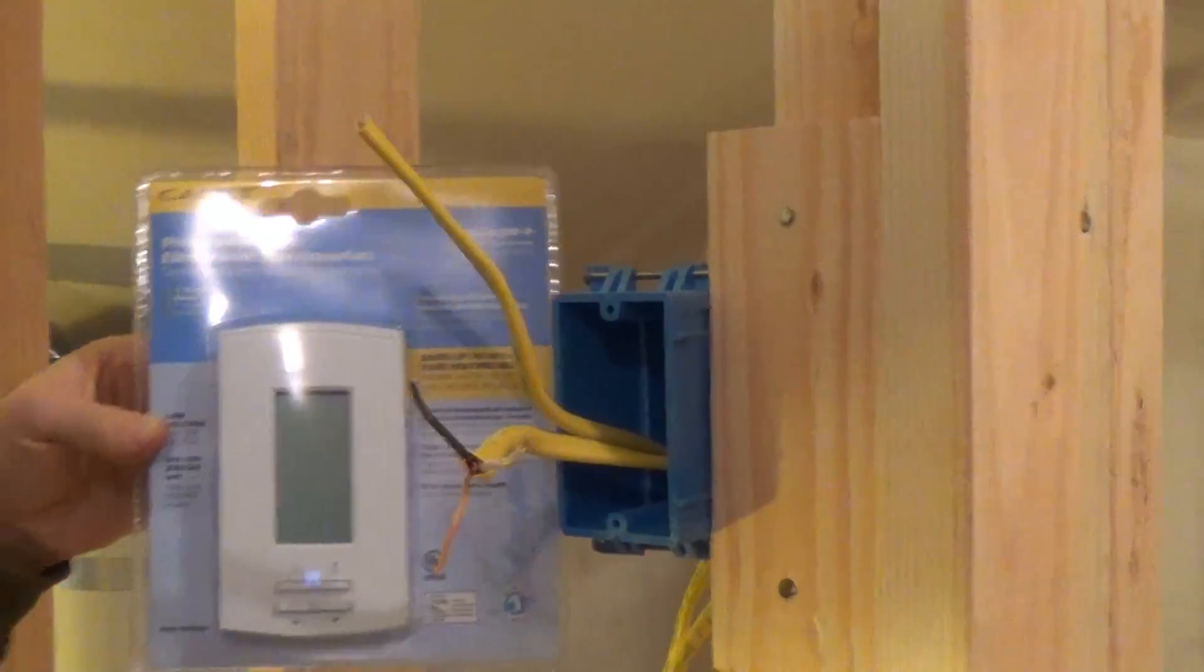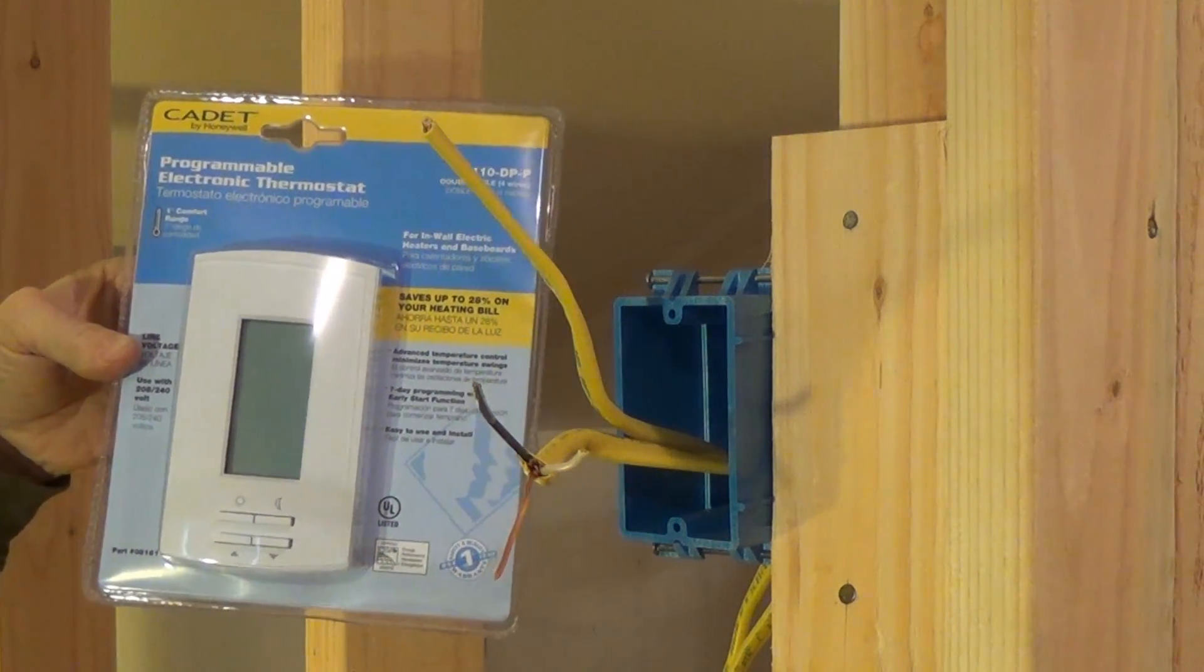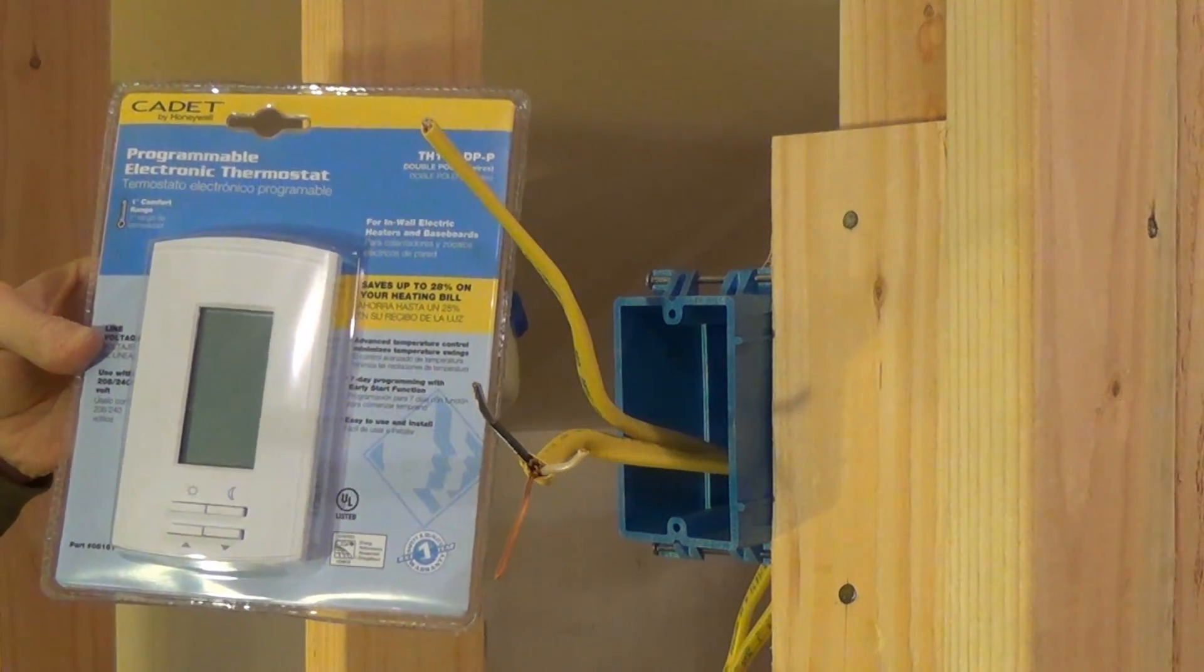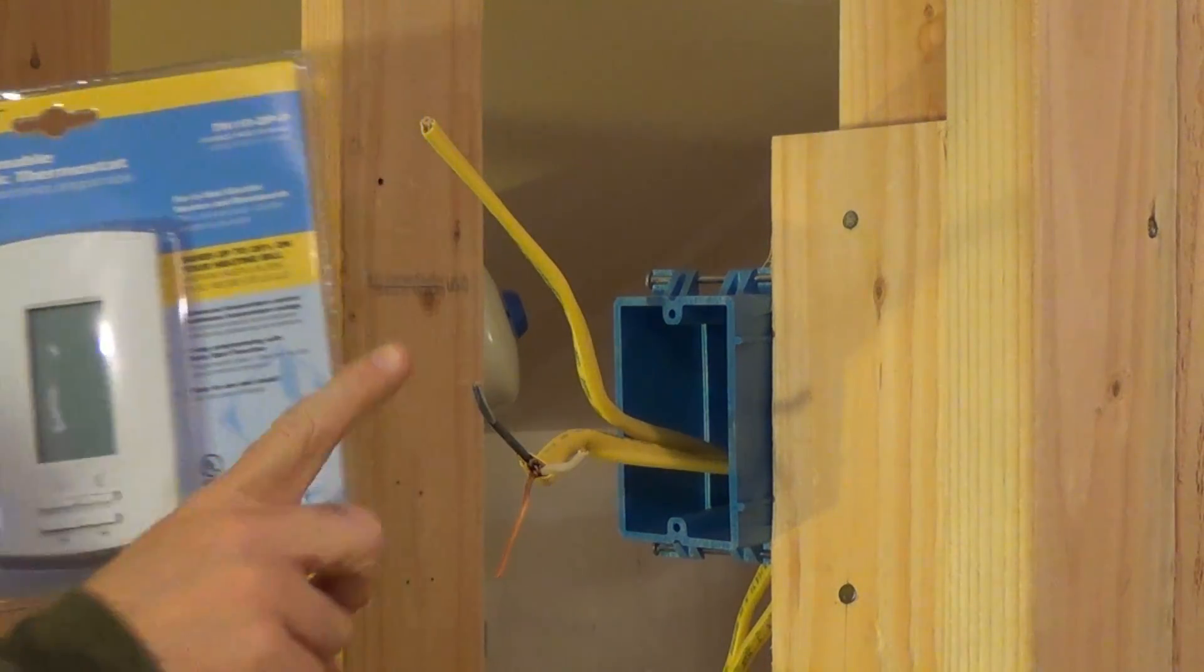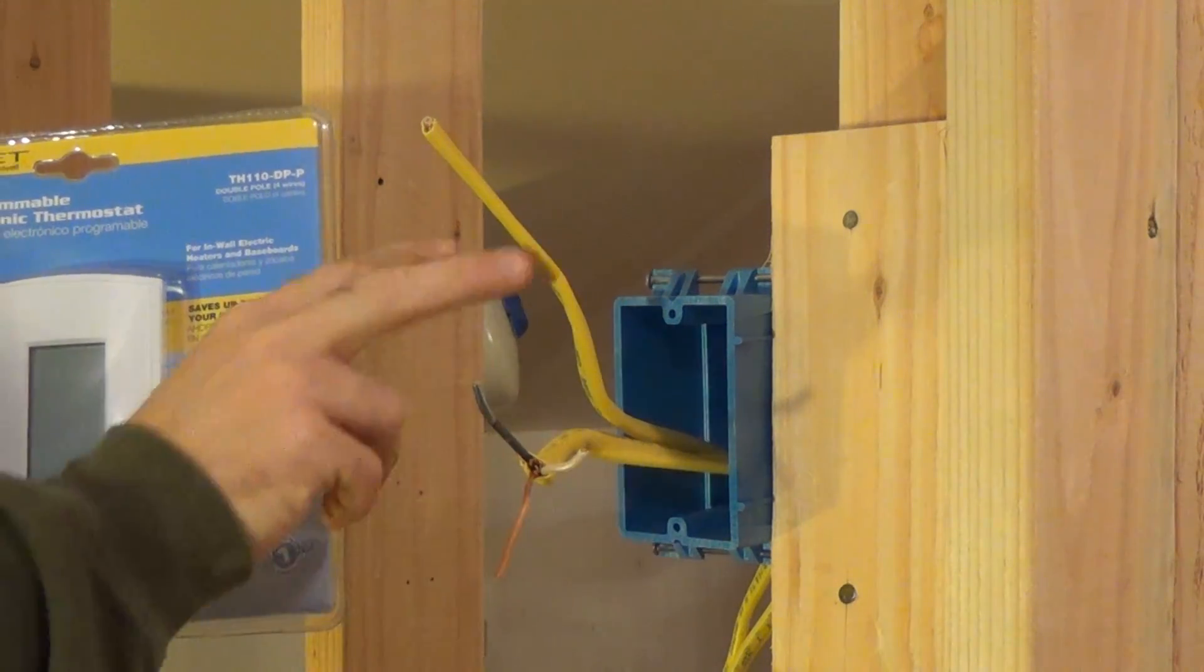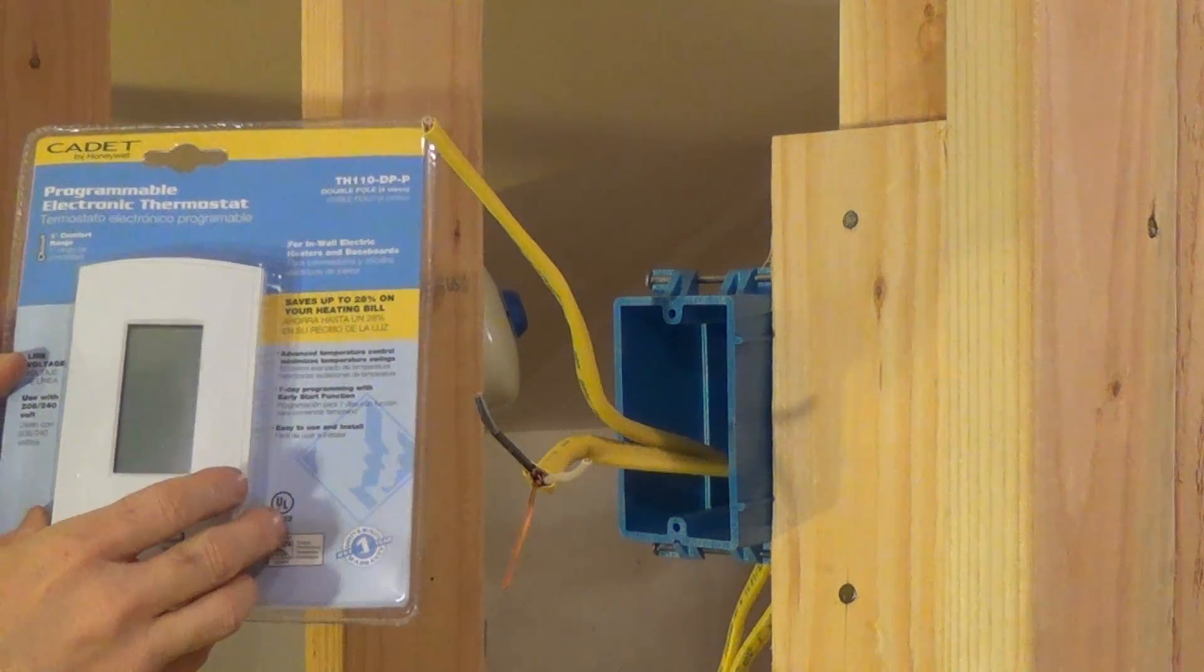let's see if I can focus here, yeah you got it there. This is a programmable electric thermostat for cadet heaters and this is a double pole system. I have a 240 volt line coming in and then this one's going up and I'll show you how to wire it up today.